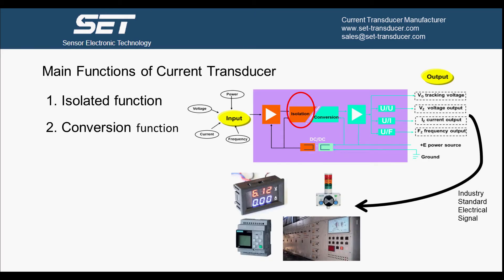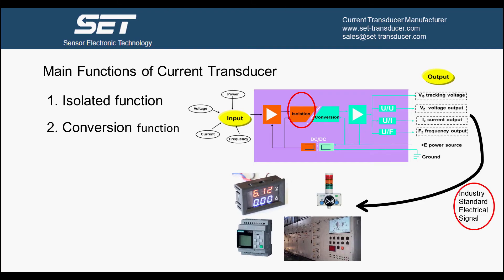Second: conversion function. Current transducer can convert any non-standard electrical current to industrial standard electrical signal, which is much easier for terminal equipment use.